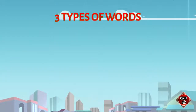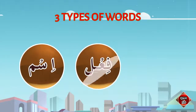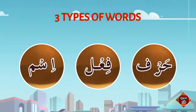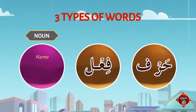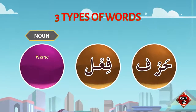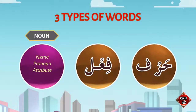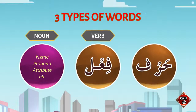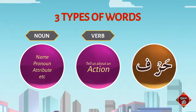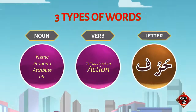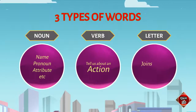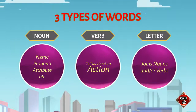There are three types of words in Arabic: ism, fi'il, and harf. Ism means noun, which includes names such as kitab or Makkah, or pronouns, or attributes like muslim, mu'min. Fi'il means verb, which tells us about an action. And harf is a letter which joins nouns and/or verbs, like for, from, in, and so on.